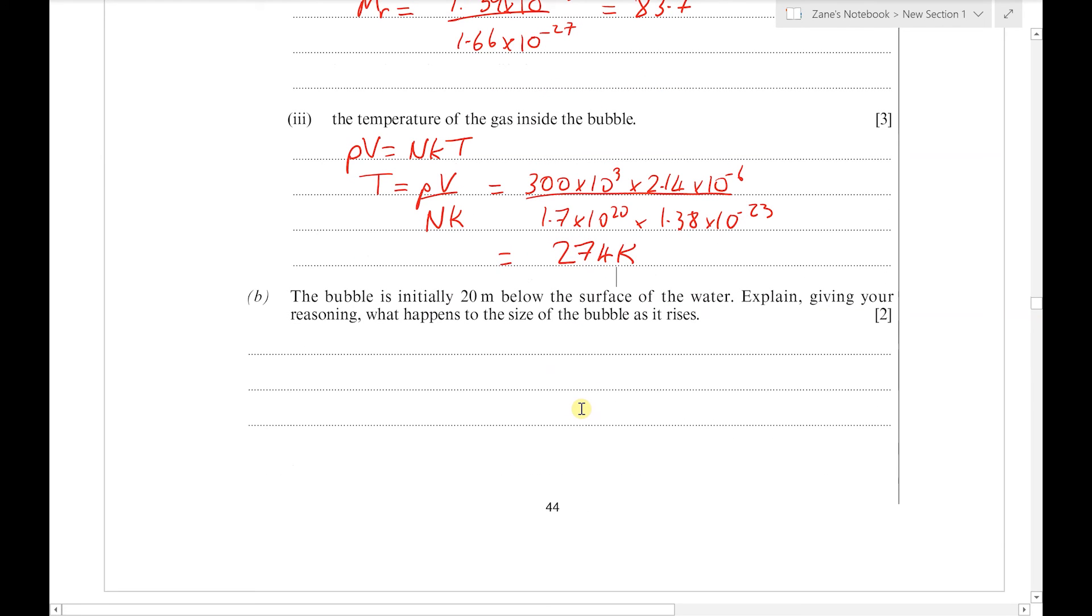Finally, we're told the bubble is initially 20 m below the surface of the water, and we need to explain what happens to the size of the bubble as it rises. The basic idea is that the external pressure decreases.